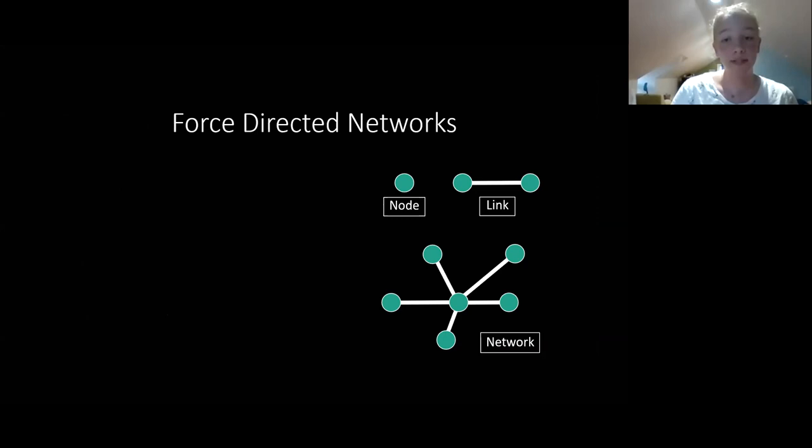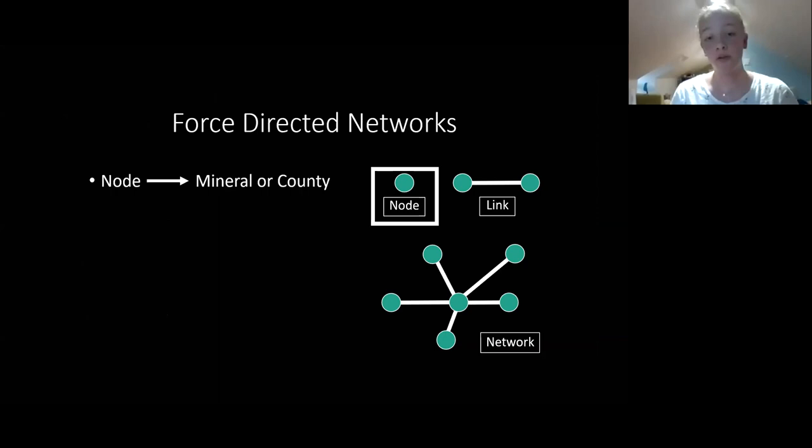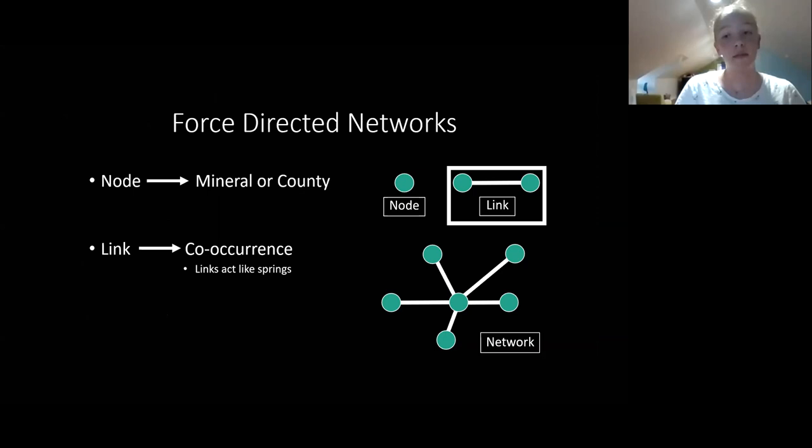So I'll explain how a network works now. The dots in the network are called nodes and they represent either a mineral or county in this case. A link between the two means that that mineral is found in that county. The links act like springs. The links push and pull the mineral and county nodes together. What ends up happening is that when they push two nodes closer together, that shows that they have more minerals in common. So the closer two county nodes are together, the more mineral species that they have.